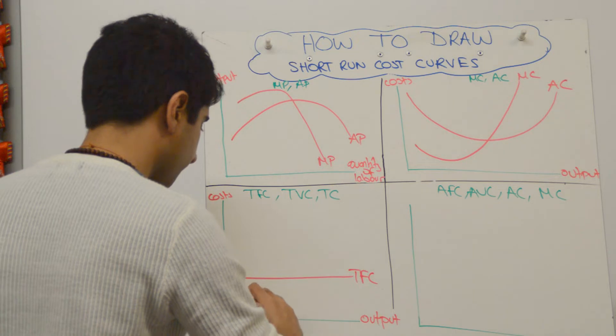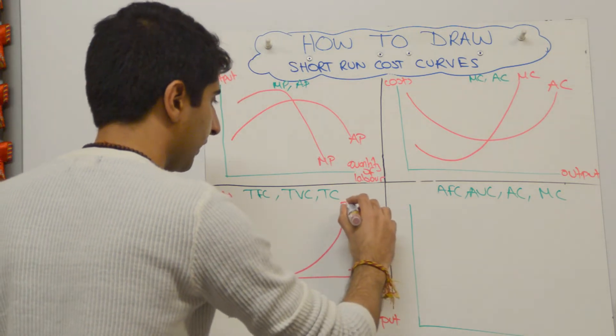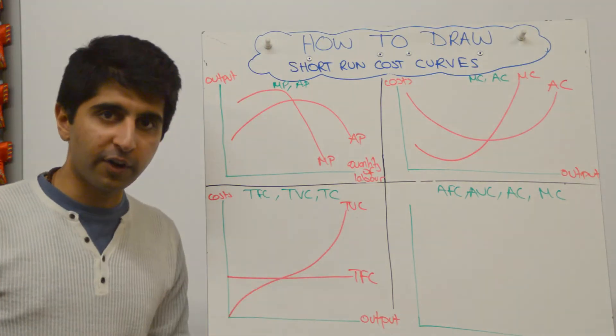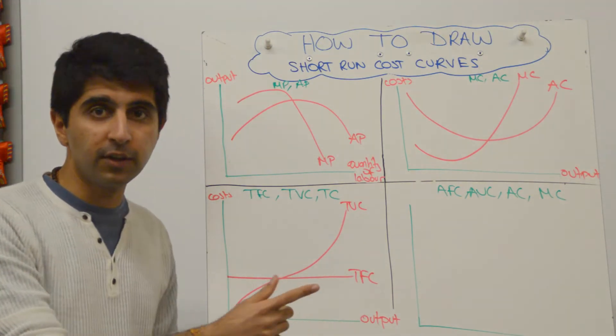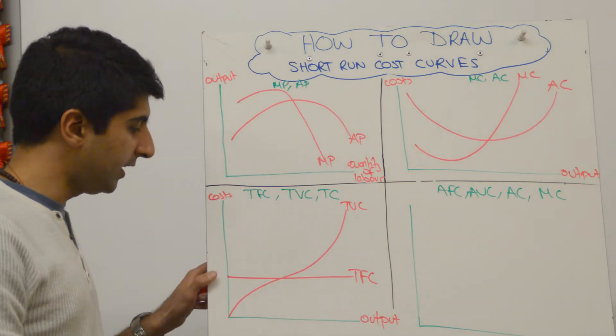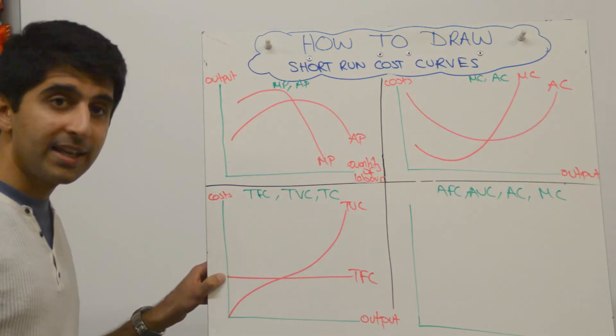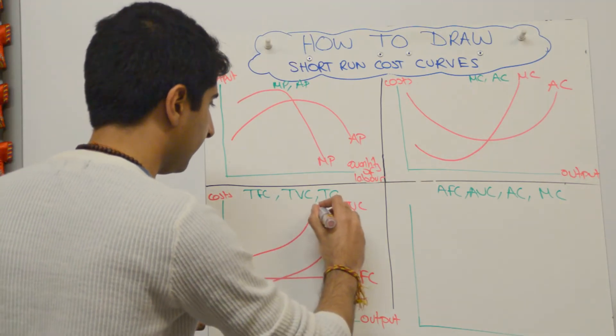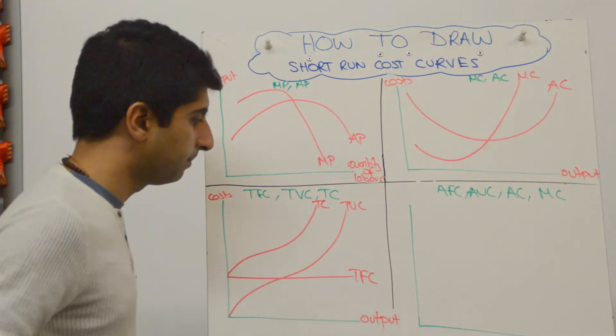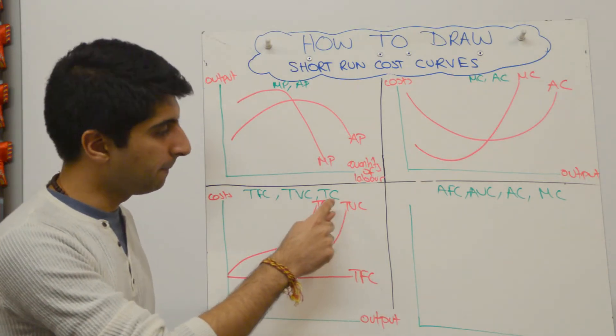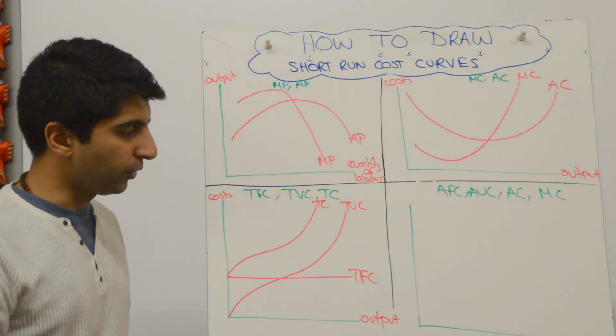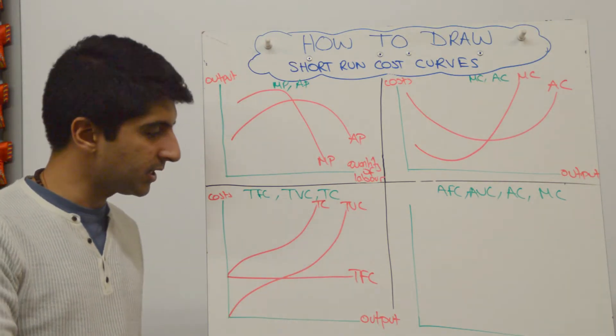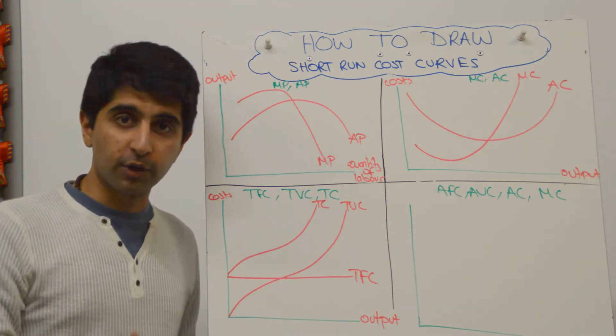And our total cost curve is going to take the shape of our total variable cost curve, because our TFC is constant but a bit higher. So TFC starts where TFC starts, and it takes the exact same shape as TVC. All right, so you've got total fixed cost, total variable cost, and total cost. That's how you draw those, really, really simple—so a little wavy line like that. Just learn the shape of it. If you want to understand why, watch my video on short-run cost and you'll get it there.